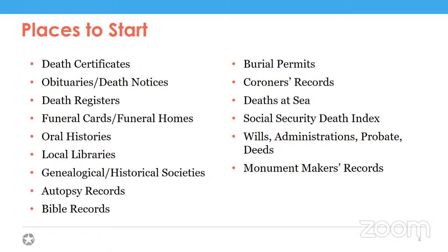Then there are some more specific things: burial permits, coroner's records, deaths at sea — lists are kept of those, so if your ancestor was a fisherman or possibly in the Navy, you might search one of those indexes. The Social Security death index, wills, administrations, and probates are also useful. Somebody could have specified in their will that they own a plot at a cemetery, or if they were military or part of a historical event, monument makers' records are kept as well.